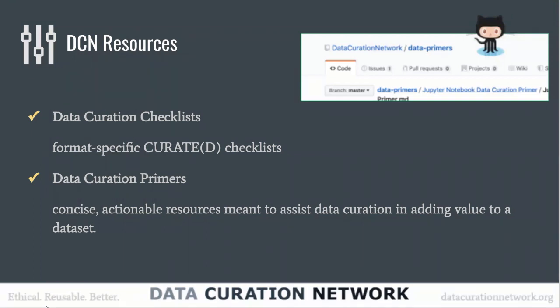The data curation primers are an opportunity for curators, subject liaisons, and others to share their expertise about file formats and domains. The DCN resources include data curation checklists — format or subject-specific checklists that follow the CURATE model — as well as these primers. The primers are meant to jumpstart the curation process for a variety of file formats, domains, and disciplines. They're meant to be incredibly actionable — say you get a .CZI file in your repository, you can look up the CZI file primer and see what software you need, and what curatorial considerations to take into account.